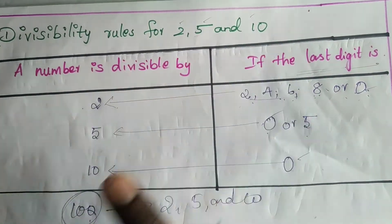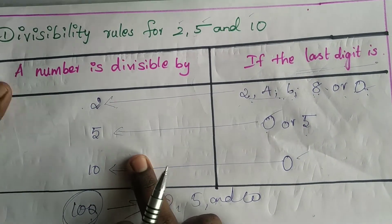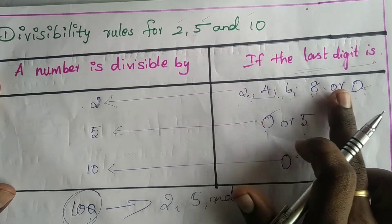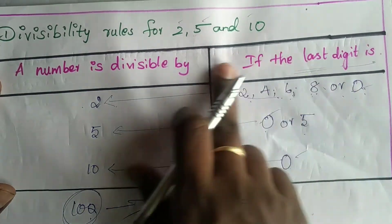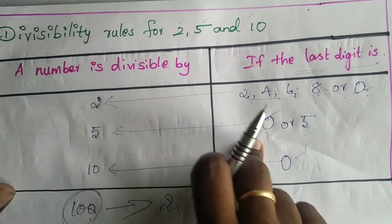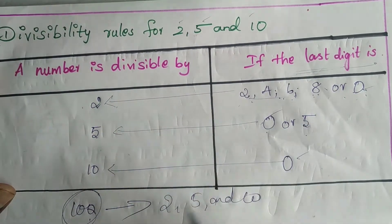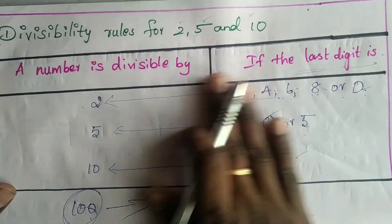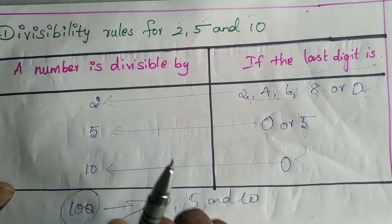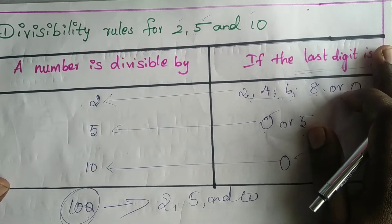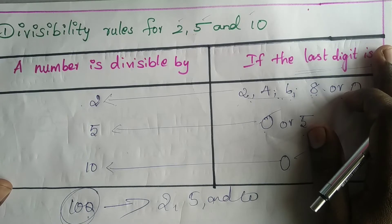Divisibility rule for 2: the last digit is 2, 4, 6, 8, or 0 — then the number is divisible by 2. For 5, the last digit must be 0 or 5. For 10, the last digit is 0. If you recall these every day, you can easily identify which number is divisible by which.